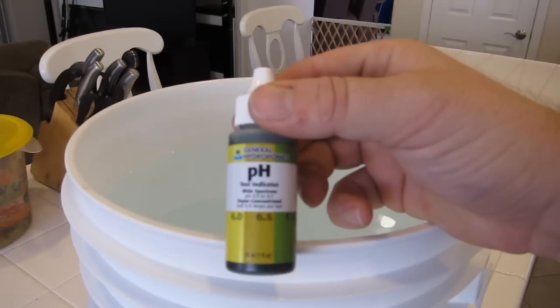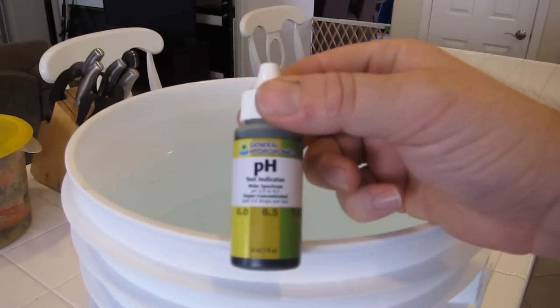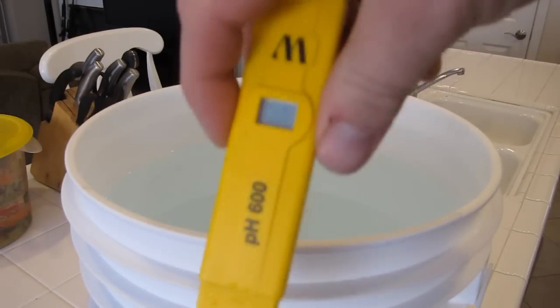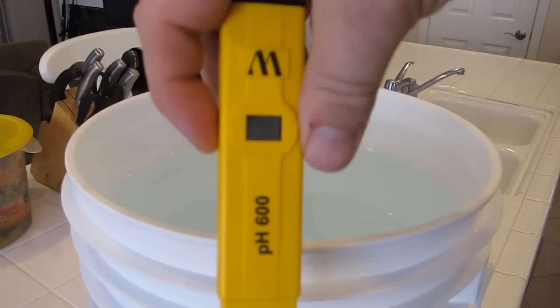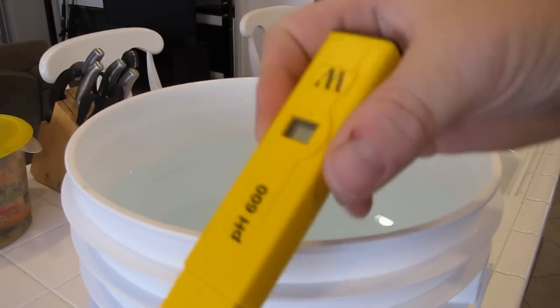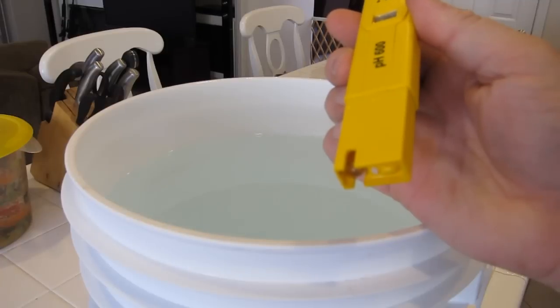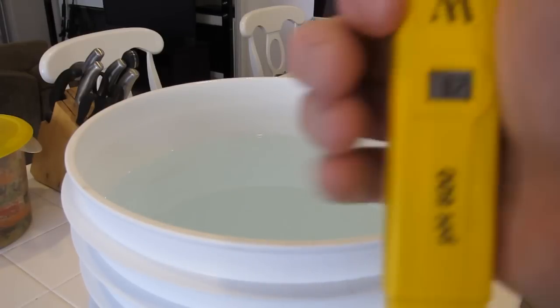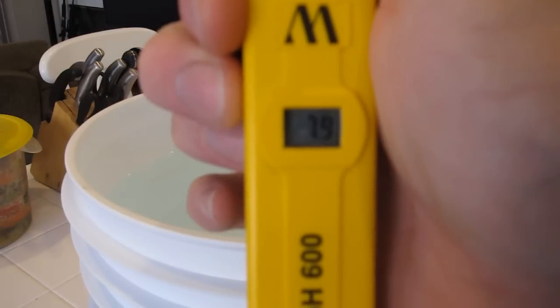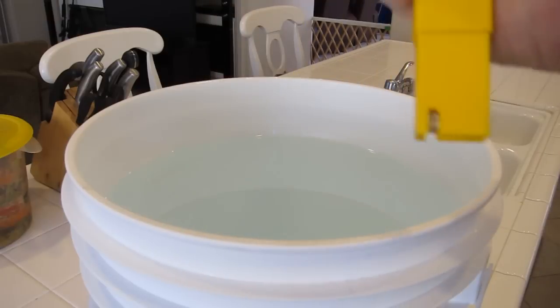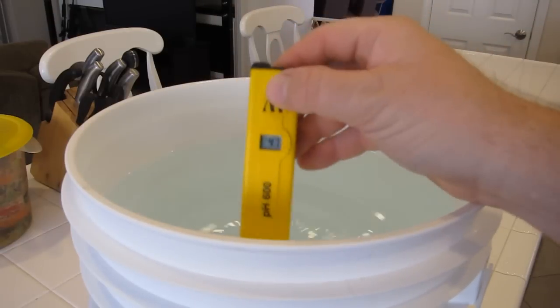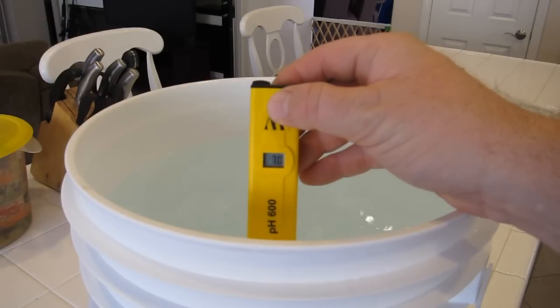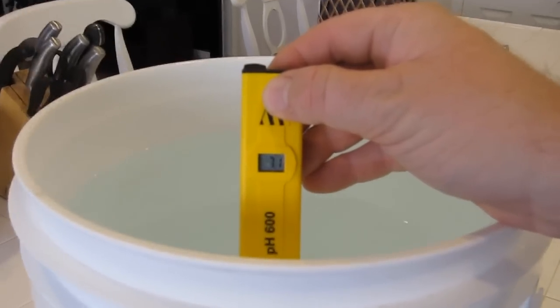There's a couple of ways we can do that. We can use the pH test solution that you got with the General Hydroponics starter pack, or what I like to use is an electronic pH tester. The reason I like this is it's a little more expensive, but you get to use it a lot quicker—it gives you quicker, faster results. It's very simple to use—you basically just turn the thing on and you'll see an indicator that tells you what the pH level is. You put it in the water, give it a little stir, and we'll see what the current situation is with the water right now.